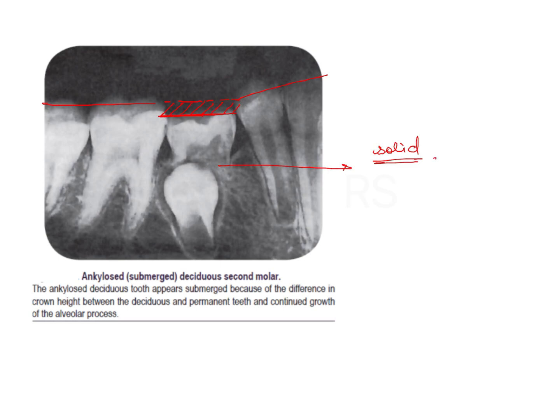The reasons for this disturbance could be a local metabolism defect, trauma, infection, genetics, or a combination of these conditions. The treatment protocol is to remove this tooth so that there is no malocclusion due to failure of eruption of the permanent tooth underneath.